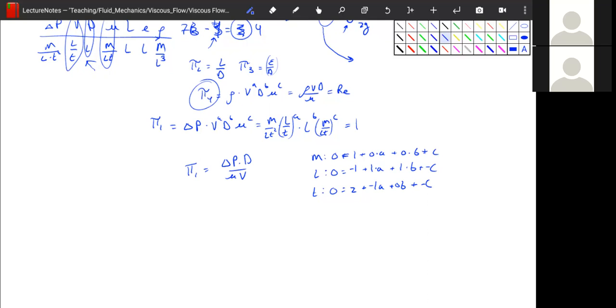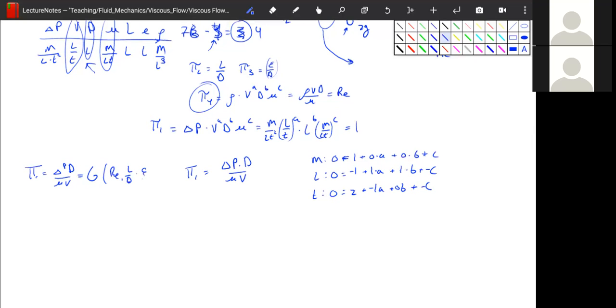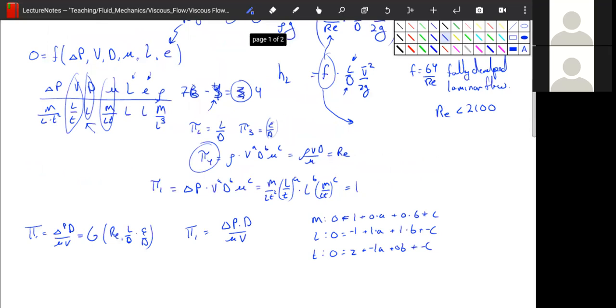So what we've learned, right, from this is we've learned that our delta P, our pi one is equal to delta P D over mu V. And that is equal to some function of our other pi groups, which is our Reynolds number, our length over our distance, and our E over D.